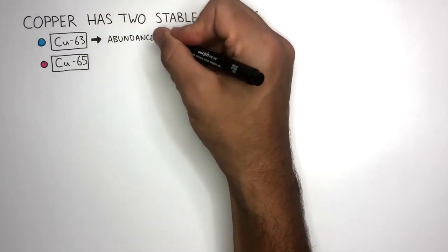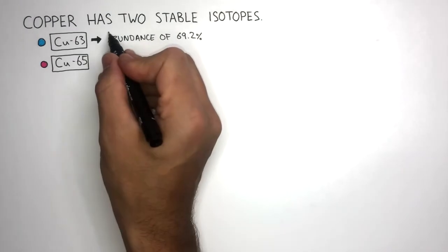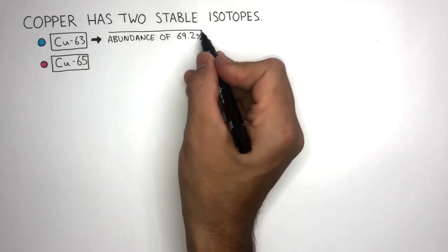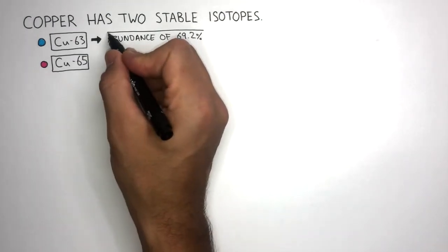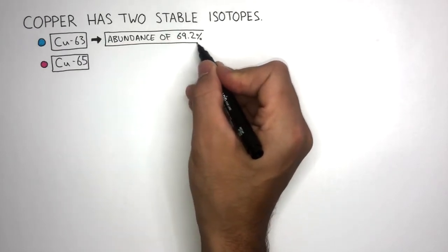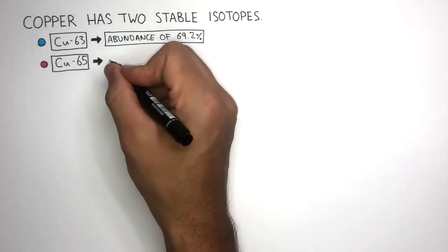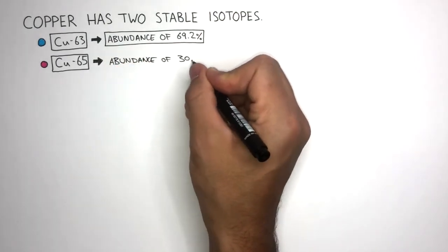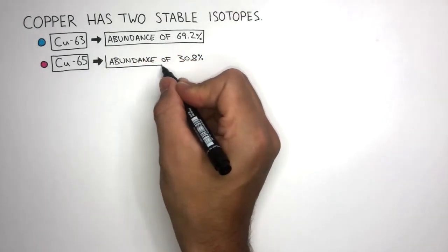there is an abundance of 69.2% copper-63 atoms. This just means of all the copper atoms in the sample, 69.2% of them are copper-63 atoms, whereas there's an abundance of 30.8% copper-65 atoms.